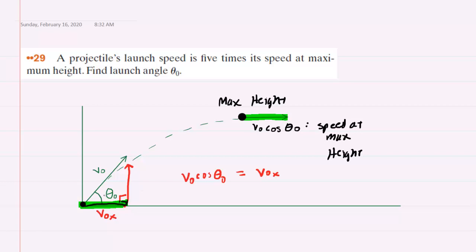We were told that the initial launch speed was v naught. So now let's translate the statement into an equation. It says the launch speed, which is v naught, equals five times the speed at maximum height. The speed at maximum height was v naught cosine of theta naught. So that's the equation that we have and we can solve that equation for theta naught. Let's write it down here so that we can algebraically manipulate it.